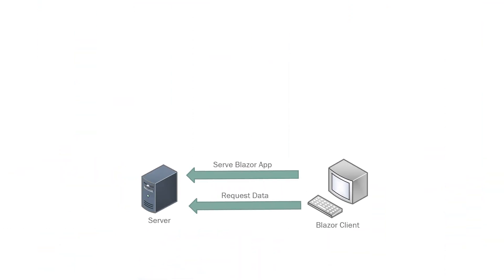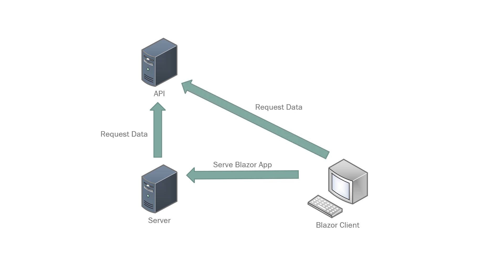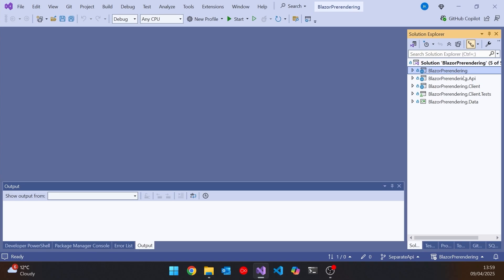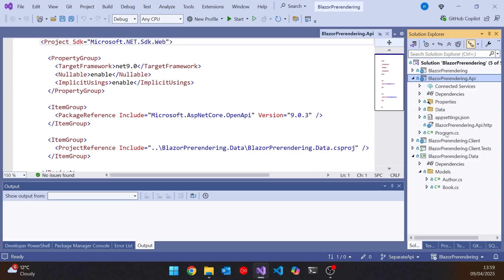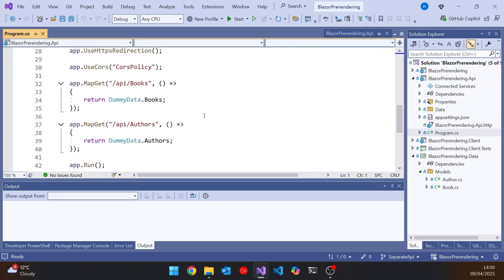A better architecture would be to separate out those two jobs. I've created a separate API project in advance — that's the one that just serves up the API data. It's communicated to from the server, because the server needs the data when it's doing pre-rendering, and also from the client, which needs the data live. In that API, it's a very simple minimal API with just endpoints for getting the books and getting the authors.